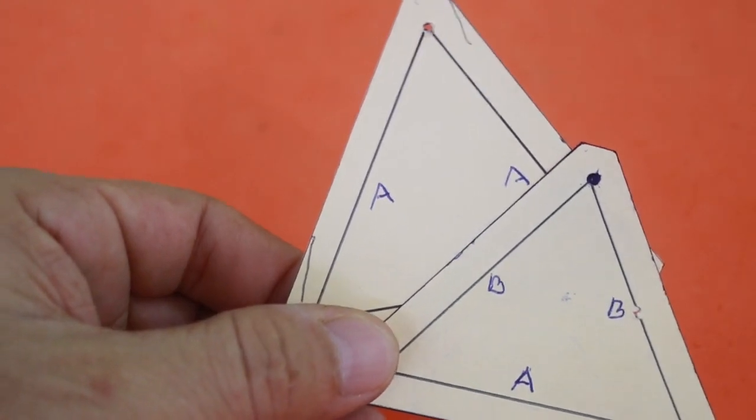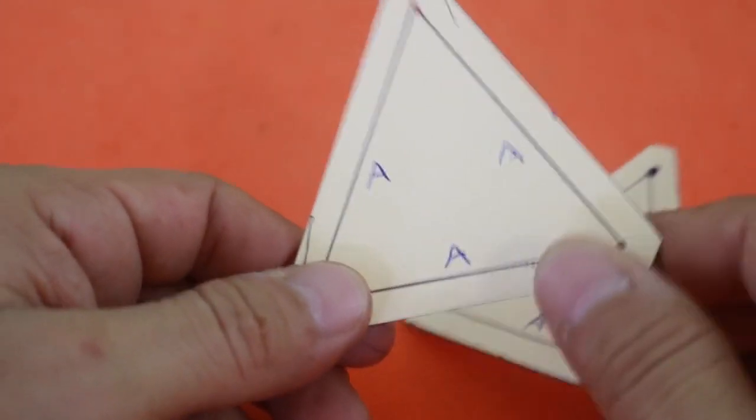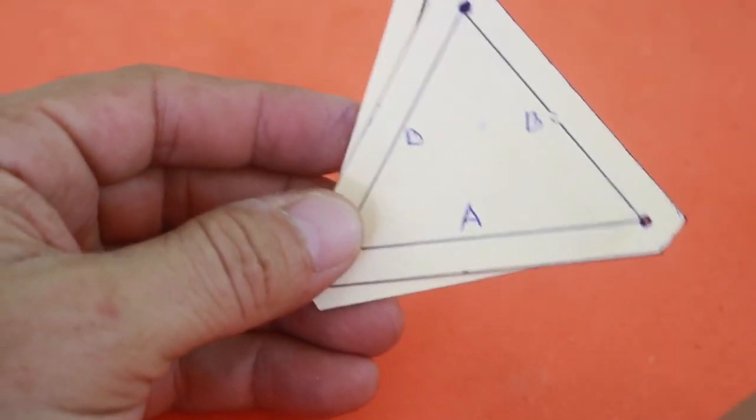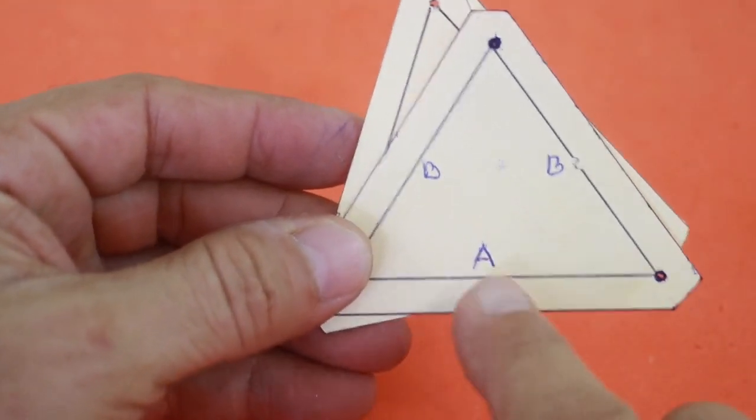You need to make 10 triangles of type AAA and 30 triangles of type ABB.